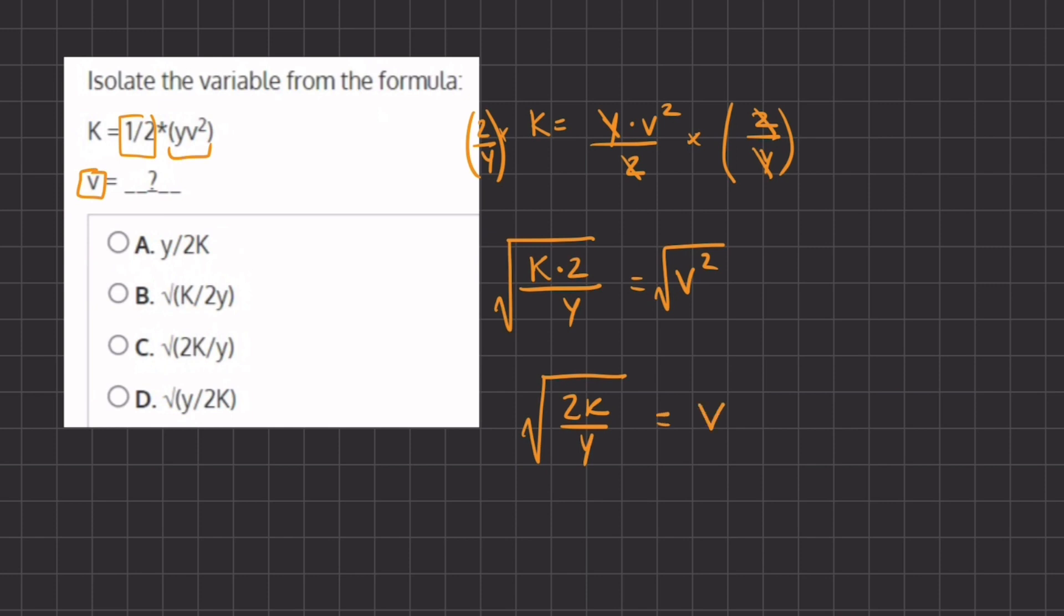So now this is going to be our definition of v. If we take a look at our answers, answer C represents our answer, and therefore this will be the final answer of the isolated variable v.